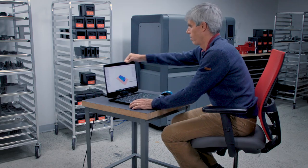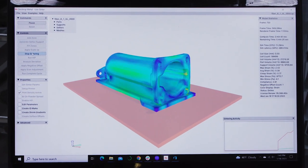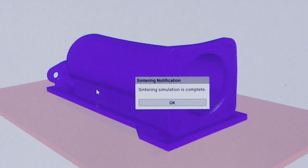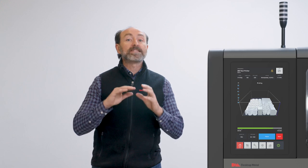Our live sinter software simulates this shrinkage and any associated distortion, creating an offset of your design for printing so that the final part meets tight tolerances, consistently within 1% of the design dimensions.